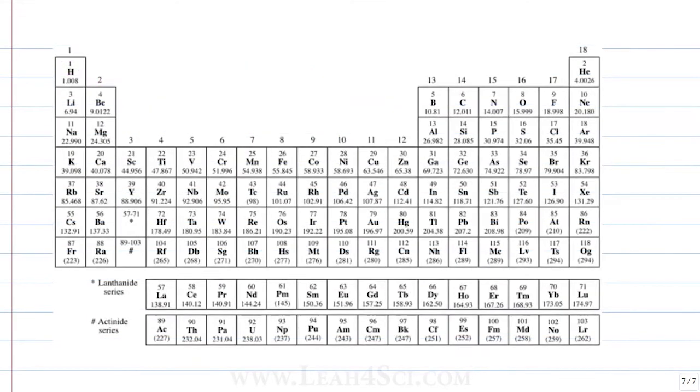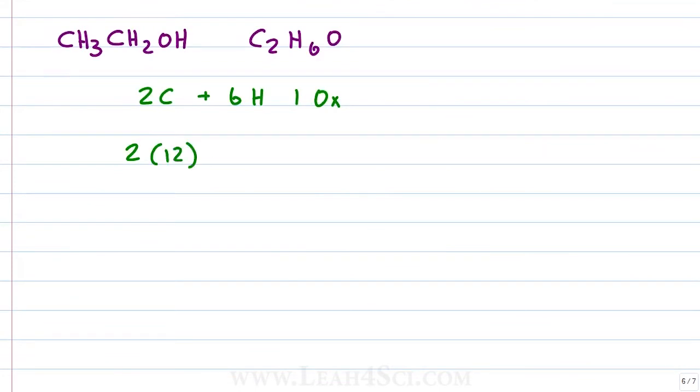And what does that give us? Let's look at the periodic table. Carbon has an atomic mass of 12.011 which will round to 12. Hydrogen we've seen as 1 and oxygen we've seen as 16. That's 2 times 12 for carbon plus 6 times 1 for hydrogen plus 1 times 16 for oxygen which gives me 24 plus 6 plus 16.